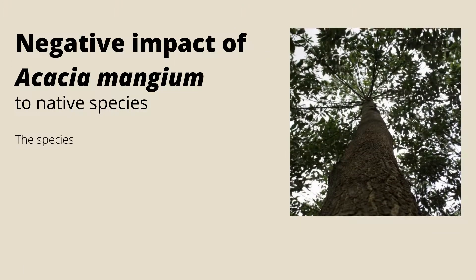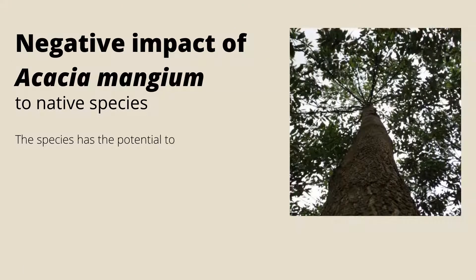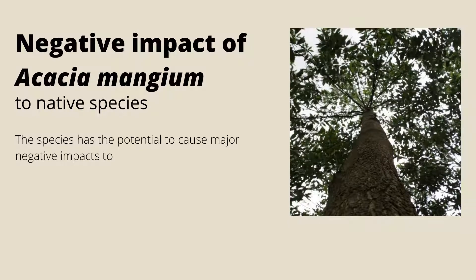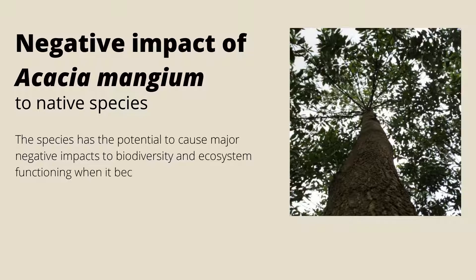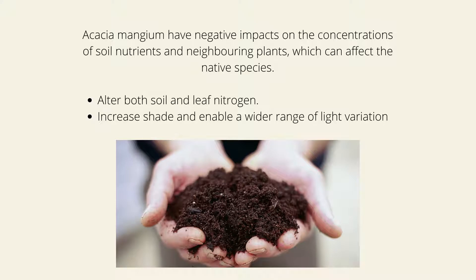The negative impact of Acacia mangium on native species: the species has the potential to cause major negative impacts to biodiversity and ecosystem functioning when it becomes invasive. It influences the concentration of soil nutrients and neighboring plants. In its early invasion stage, Acacia mangium is able to alter both soil and leaf nitrogen, increase shade, and enable a wider range of light variation, facilitated by nitrogen uptake transferred to neighboring plants.